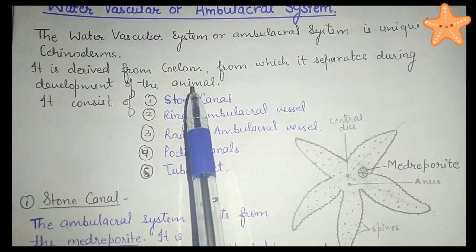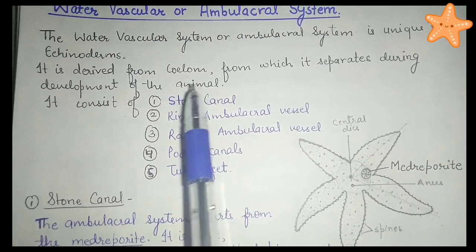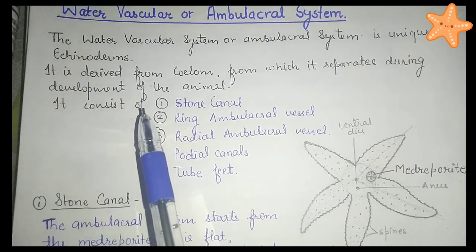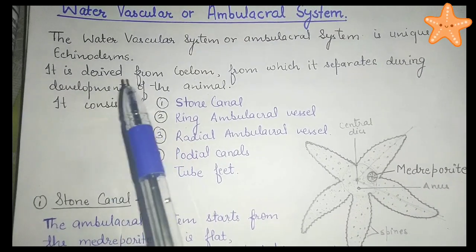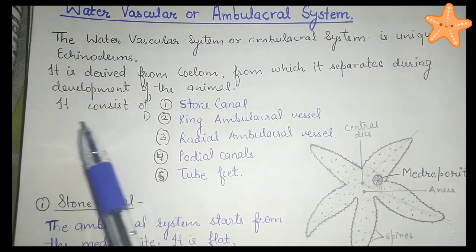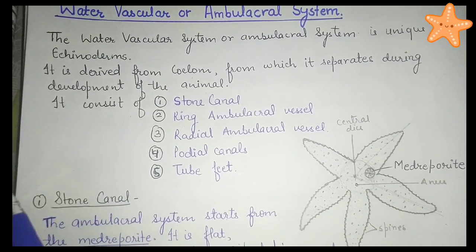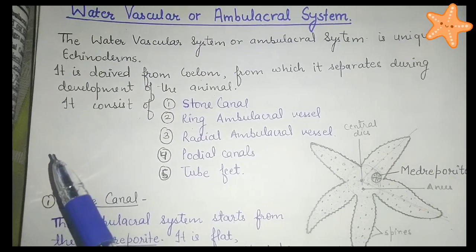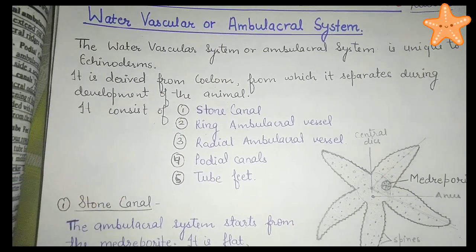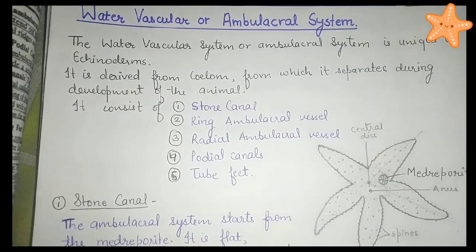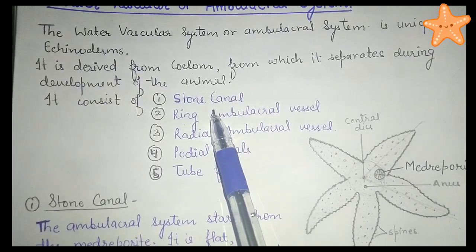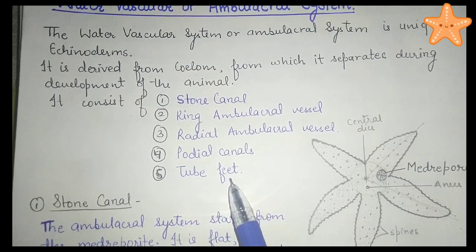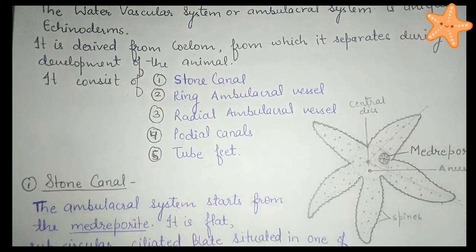In this system, there is a water inlet path, circulation of water takes place within the body, and an outlet path is also present. The whole system comprises basically: stone canal, ring ambulacral vessel, radial ambulacral vessel, podial canal, and the tube feet.